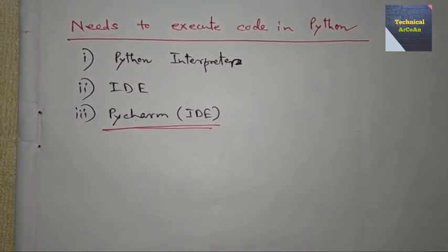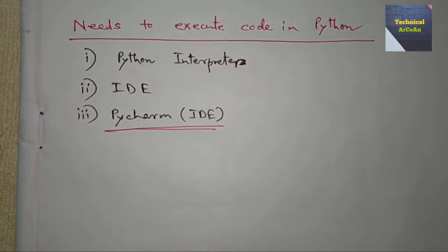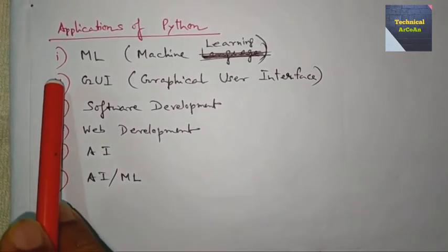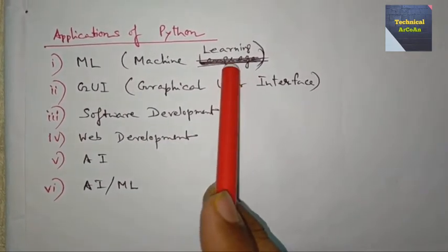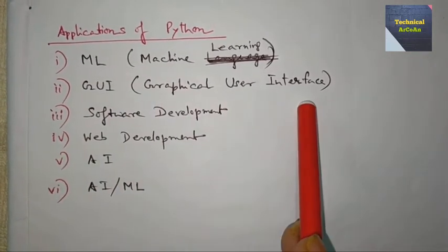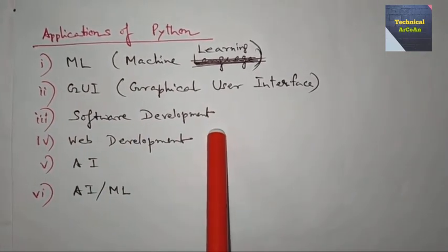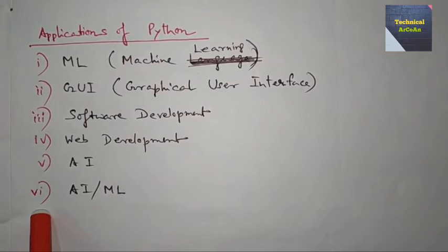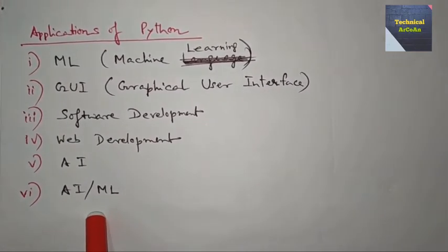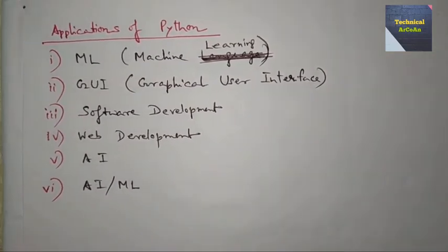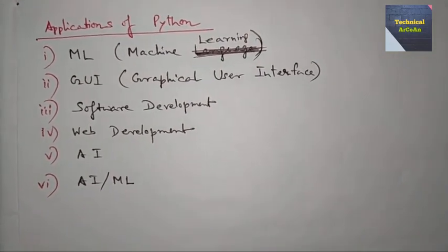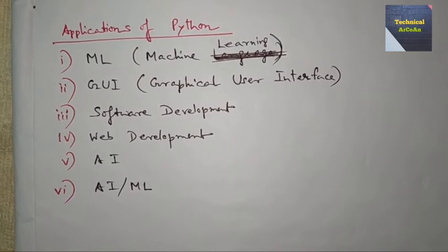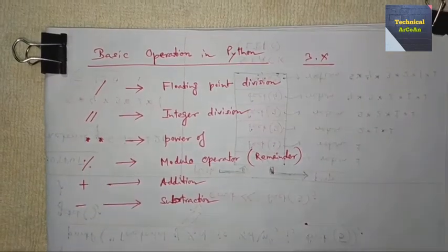Now we discuss the applications of Python language. First, machine learning. Second, graphical user interface. Third, software development. Fourth, web development. Fifth, artificial intelligence. Sixth, AI with machine learning. Also data science and machine learning - in both cases Python is most suitable. These are the different fields where we can use this language directly. Now we take basic operations in Python.